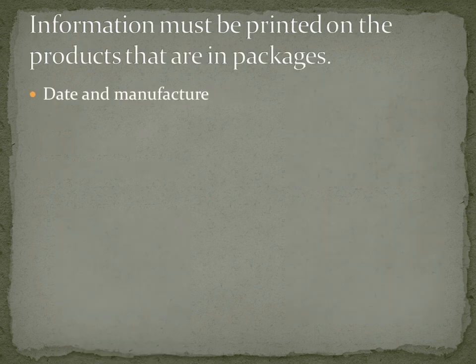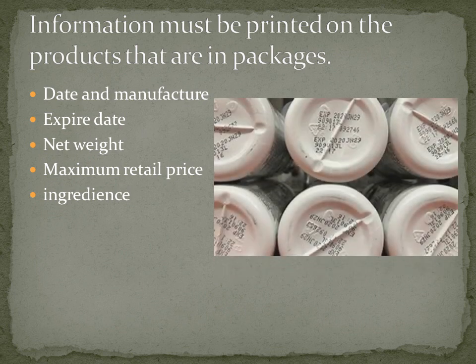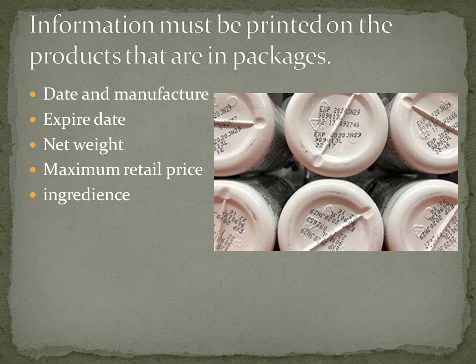Information that must be printed on products that are in packages: date of manufacture, expiry date, net weight, maximum retail price, and ingredients. For example, when buying a bottle of milk, sausages, cheese, or meatballs, you should definitely look at the date of manufacture — that is, the date it was made — the expiry date, the net weight, the maximum retail price, and the ingredients. All these must be printed on packaged products.